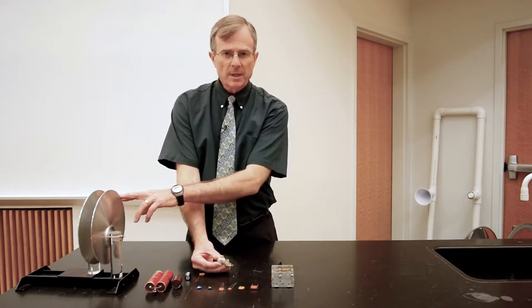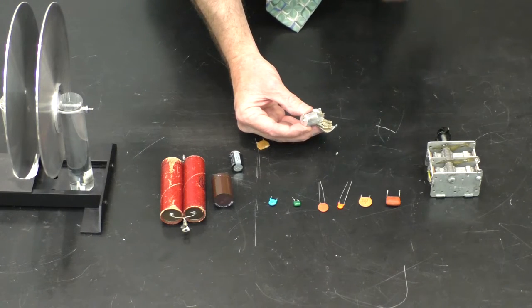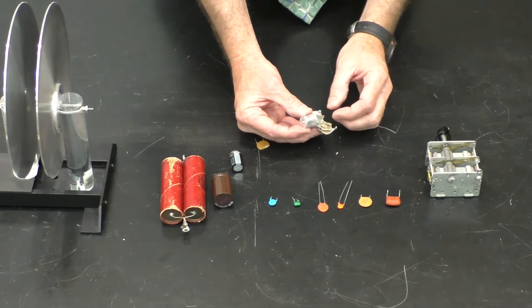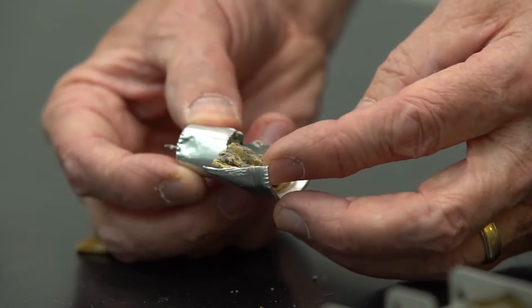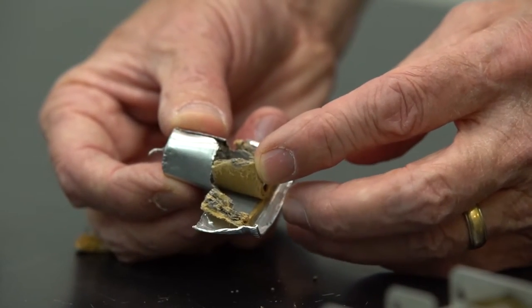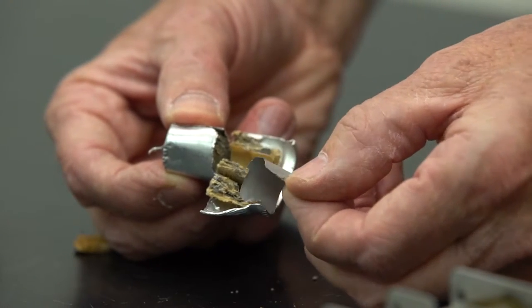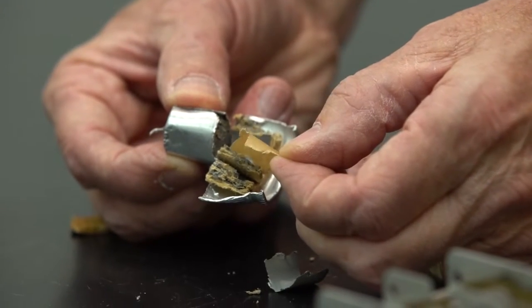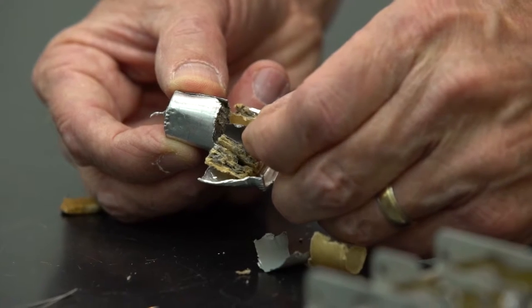In order to increase the area of the capacitor, you want to get as much area in the plates as possible in order to store as much charge as possible. So what they do with these is it's a sandwich of layers of a conductor. Here's a conductor and here's an insulating layer to separate the conducting layers. And then here's another conducting layer.